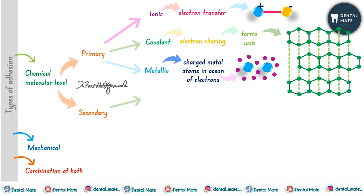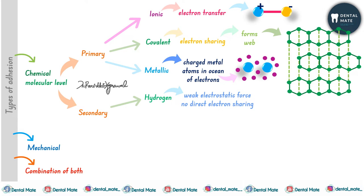The secondary type of chemical adhesion is divided into two types: first, the hydrogen bond, and second, van der Waal forces. In the hydrogen bond there is a weak electrostatic force with no direct transfer of electrons — the molecules are attracted together without electron transfer. An example is the water molecule, formed between hydrogen and another atom.